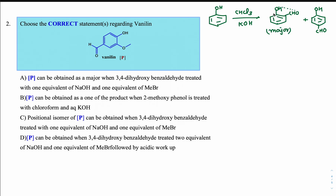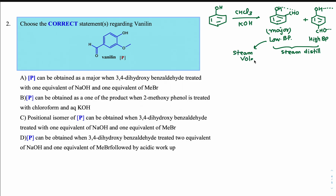In the major product (salicylaldehyde), intramolecular hydrogen bonding is present, so it has a very low boiling point because association with other salicylaldehyde molecules is reduced. The para product has intermolecular hydrogen bonding so it has a high boiling point. These two can be separated by steam distillation — the ortho product is steam volatile due to its low boiling point.